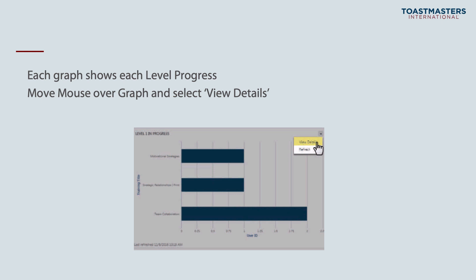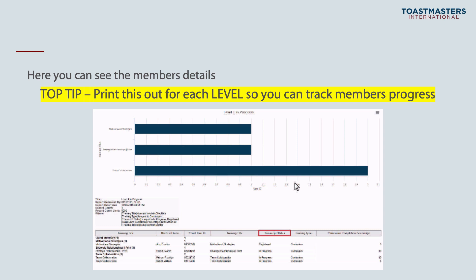Each graph shows the level progress, and as you mouse over the graph you can click view details. Down the page you'll see each level one through five, which path is being done, and the number of members on that combination. You can see member details including their transcript status: registered means they're at level one and have added the path but haven't started a project yet; in progress means they've opened and launched Basecamp and are working on a project. You'll also see a percentage on the right-hand side. The top tip is to print this out each time so you can track members' progress with a timestamp of what percentage they are through the path.